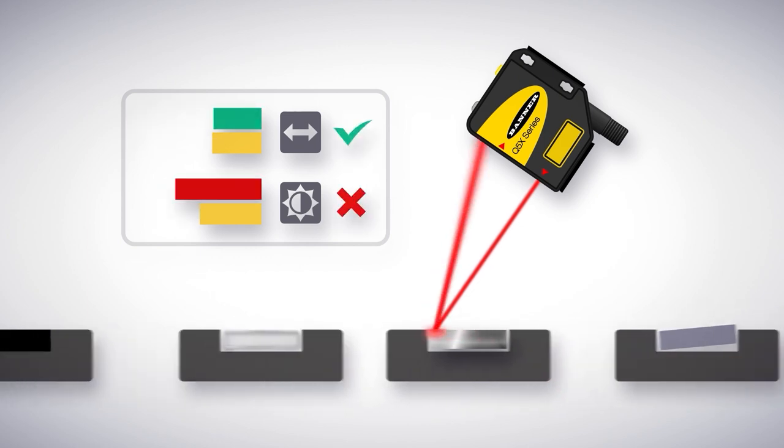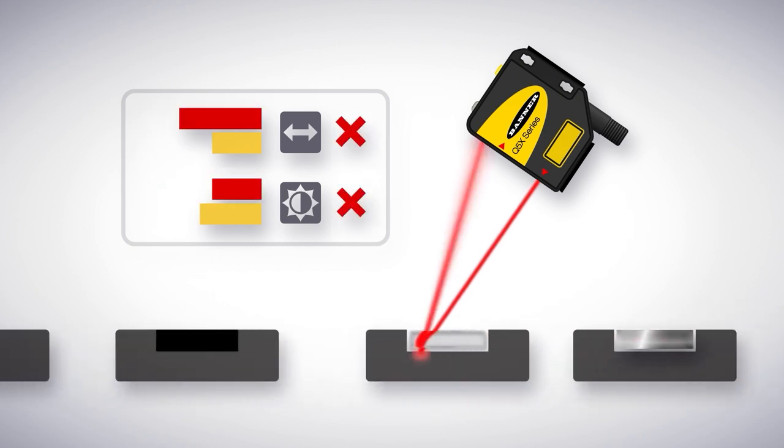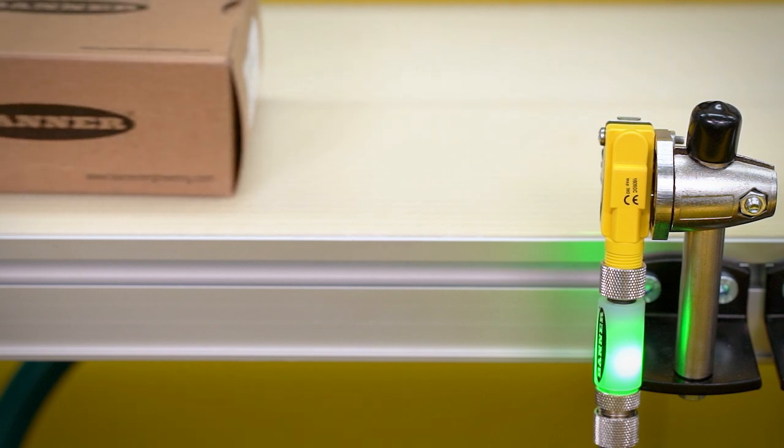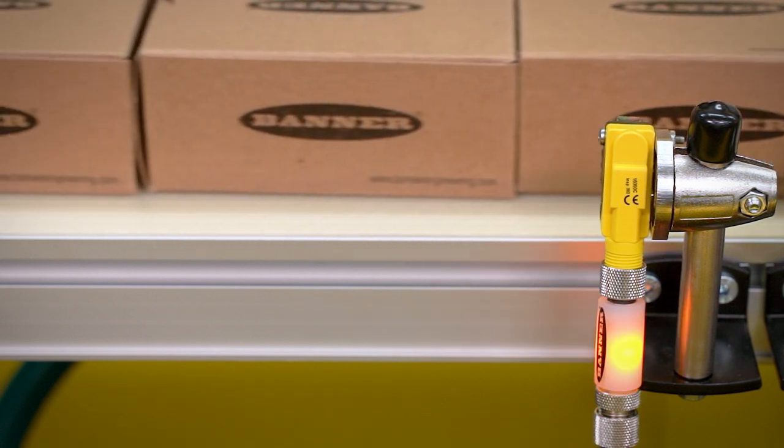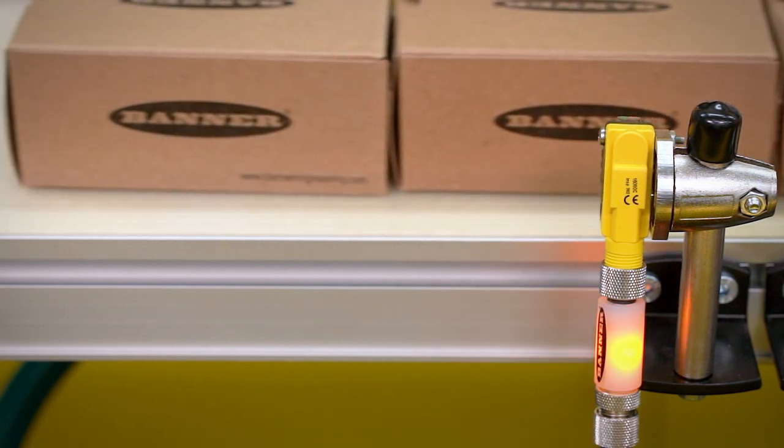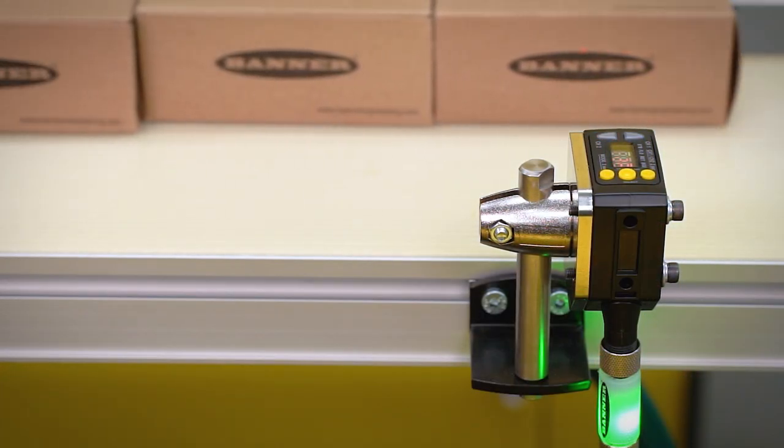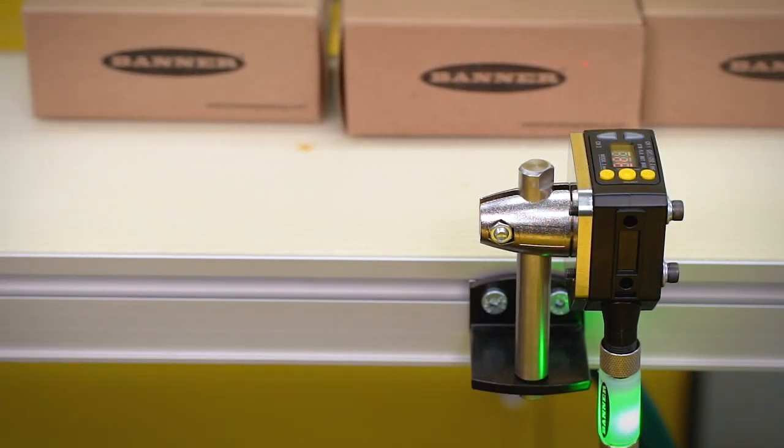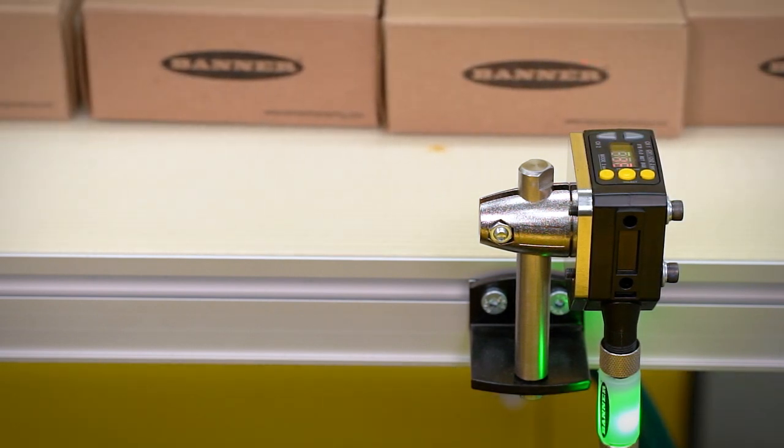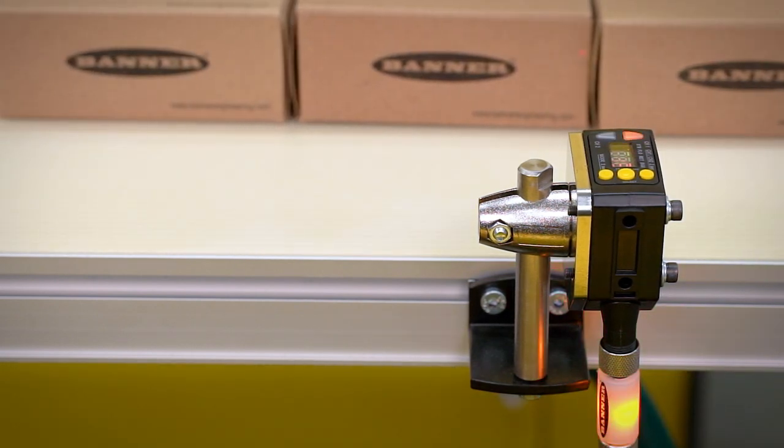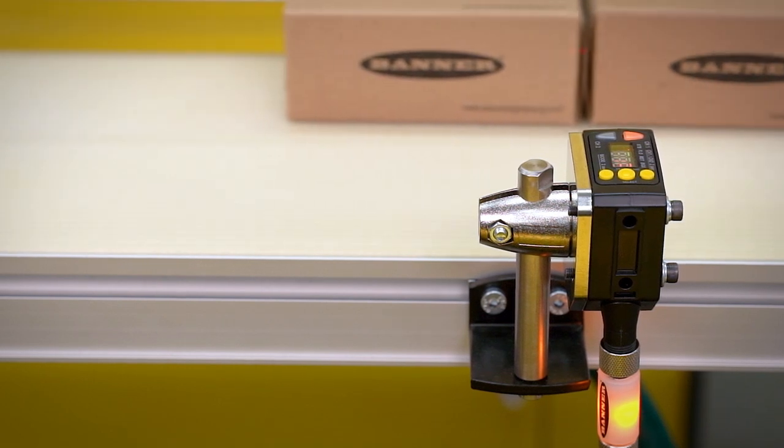There is even a special algorithm that can be used to detect conveyor jams. Detecting jams on a conveyor line with traditional jam photo-eyes can be tricked if there are no gaps between products. Banner's Q5X with jam detection does not rely on gap identification. Instead, it extends the functionality of Banner's existing dual-mode technology with a built-in jam algorithm, reducing the time required to sense a jam.